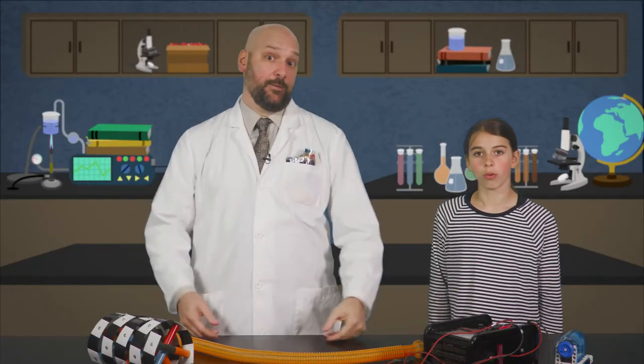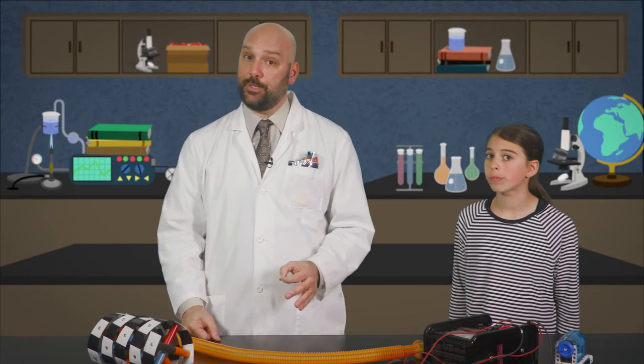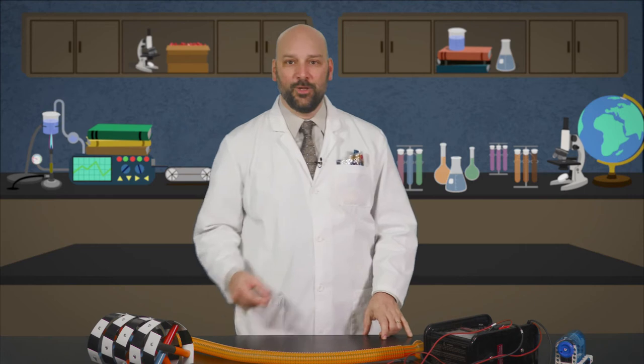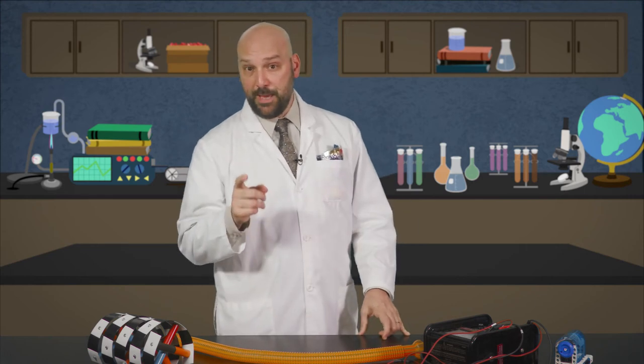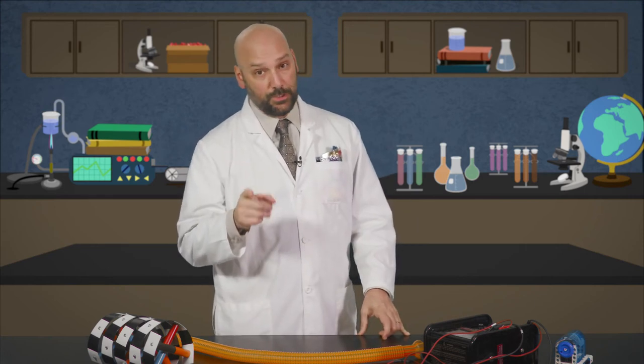So what did we learn today? We learned that deliberate practice is key to improving. That's right. Focused attention on identifying weaknesses and creating strategies to improve is how we get better. Remember, practice makes permanent. Well, there's plenty I still don't know about rockets, but I'm going to learn. Wait, I'll come with you. Remember, teachers, feedback is the key to help students with deliberate practice.